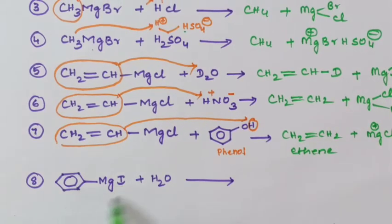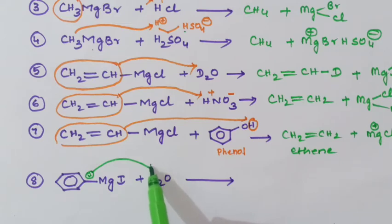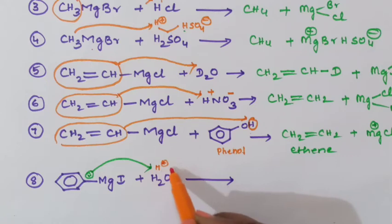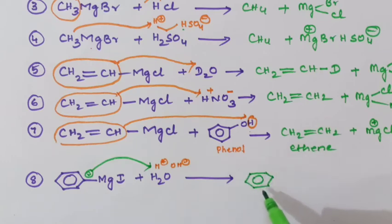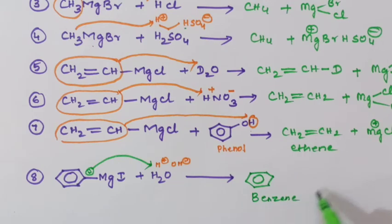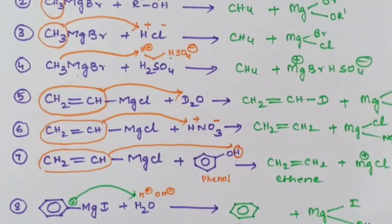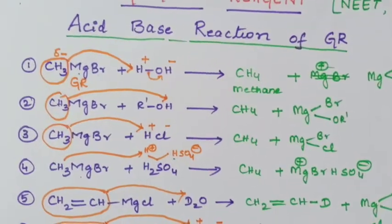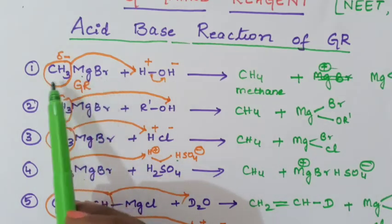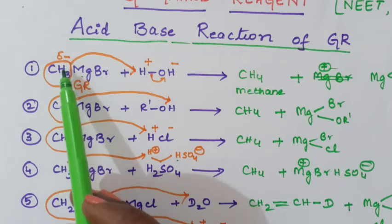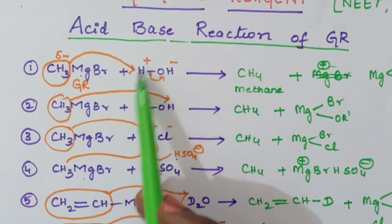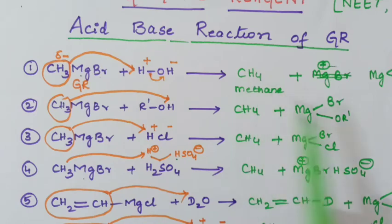In the next example, a Grignard reagent (phenyl magnesium iodide) is treated with water. The carbanion attacks H plus from water — which splits into H plus and OH minus — giving benzene as the product, and MgI(OH) as the other product. So this is the acid-base reaction of Grignard reagent. Remember that the Grignard reagent acts as a base — the alkyl group can act as a nucleophile as well as a base. Here it acts as a base, abstracting active hydrogen from the acid to form the product.